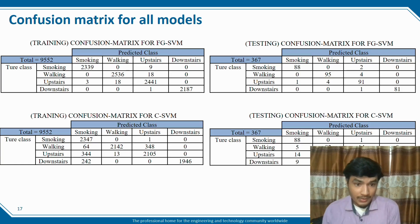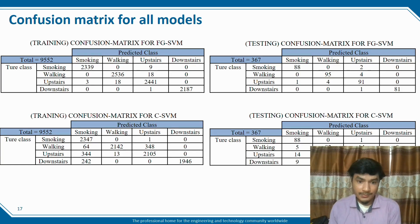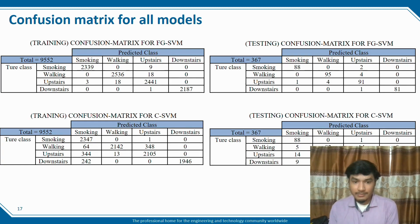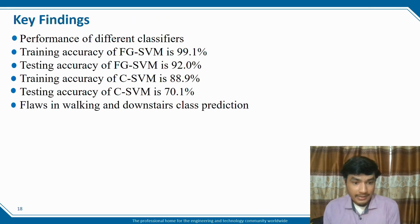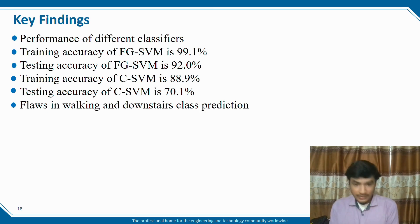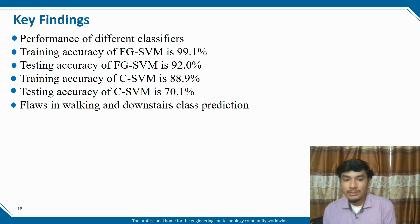Key findings — performance of different classifiers: Training accuracy of FGSBM is 99.1%, testing accuracy of FGSBM is 92.0%. Training accuracy of CHBM is 88.9%, testing accuracy of CHBM is 70.1%. There is confusion in walking and downstairs class prediction.